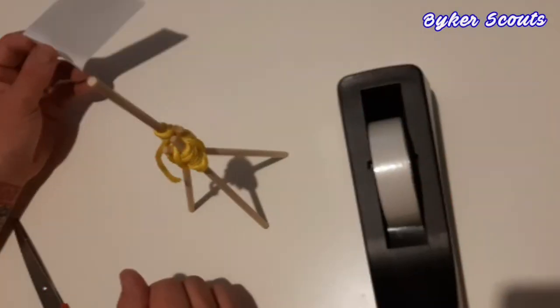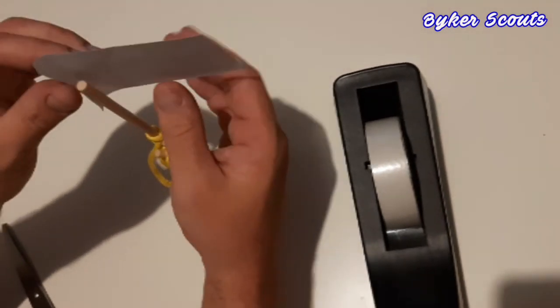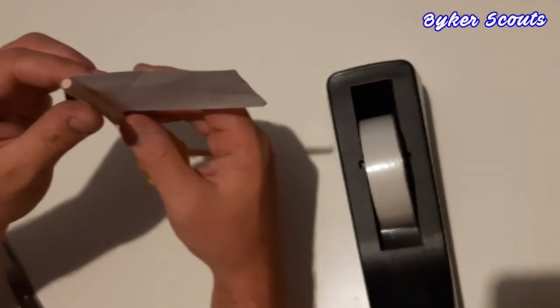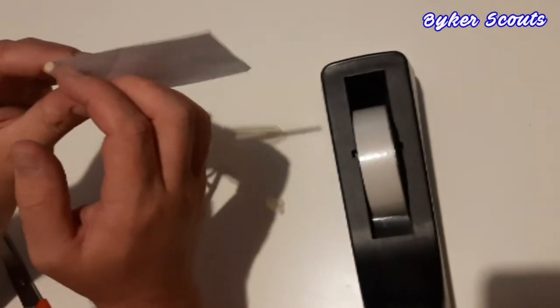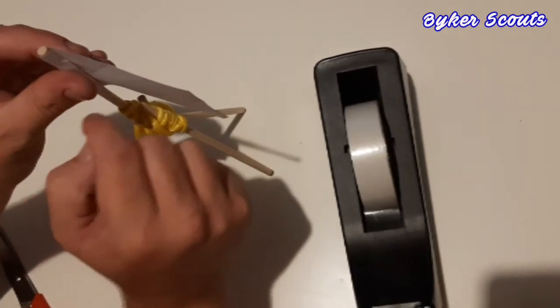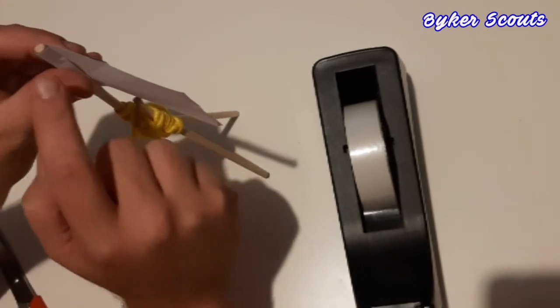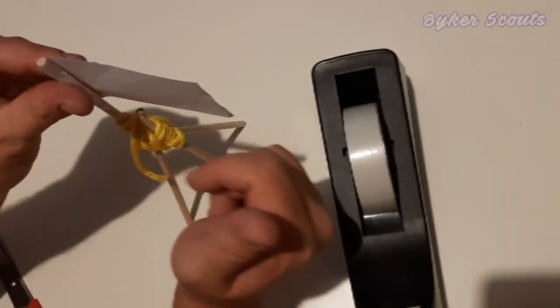And the last step for this is to sellotape your flag to your flag pole. So what I've done is just wrapped it round, and I'm just going to tape it at the bottom, top, and along the edge here.